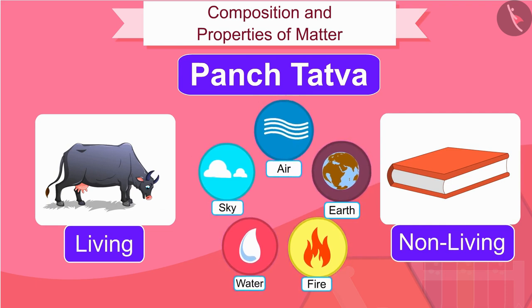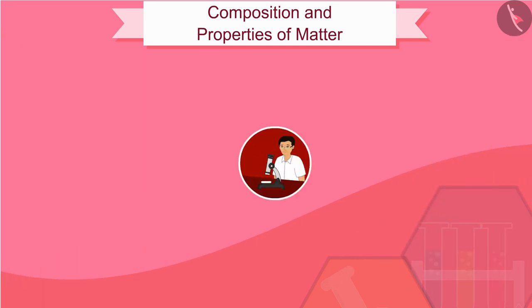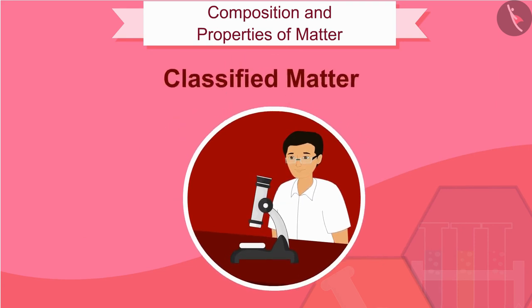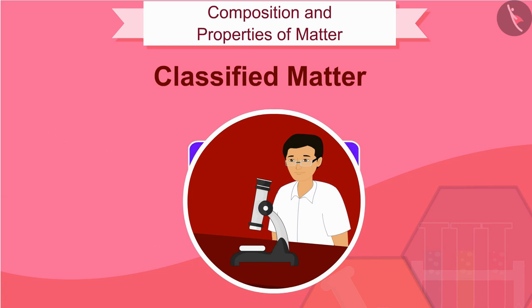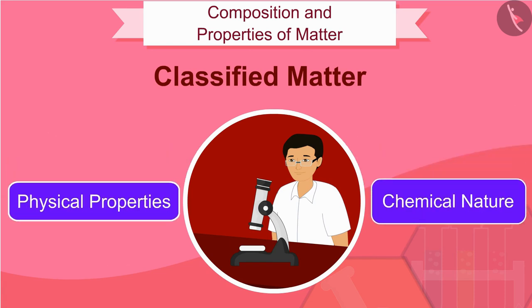Philosophers of that time have classified matter in a similar way. Modern scientists have evolved two types of classification of matter based on their physical properties and chemical nature. Let us learn about matter based on physical properties in this video.